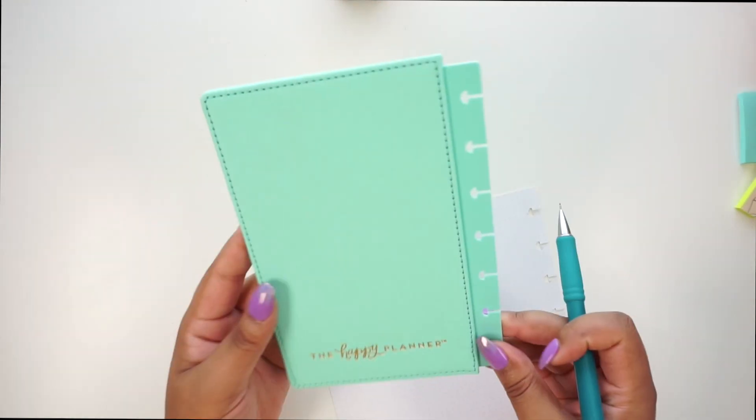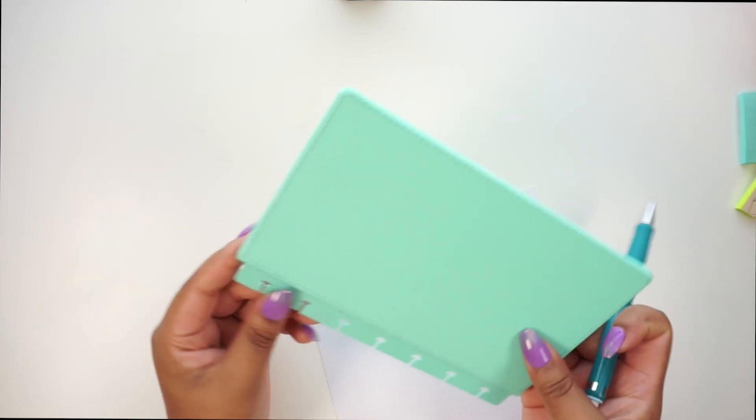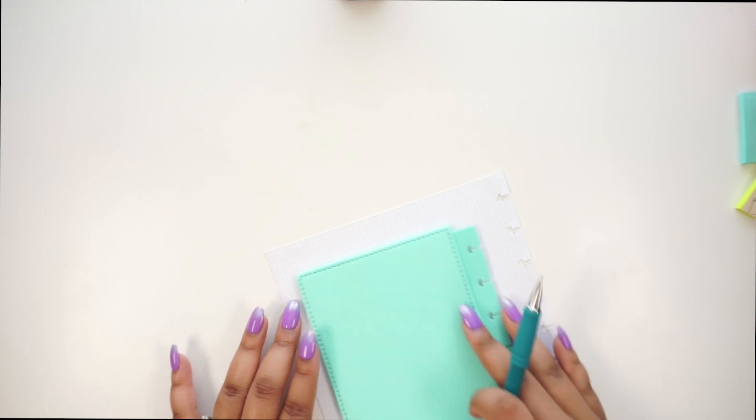And I'm going to go ahead and draw my rectangles. I still don't have a ruler. I need to go to the store and get one, so I'm going to use what I have. I'm going to use this snap cover for mini and just use that as a ruler.